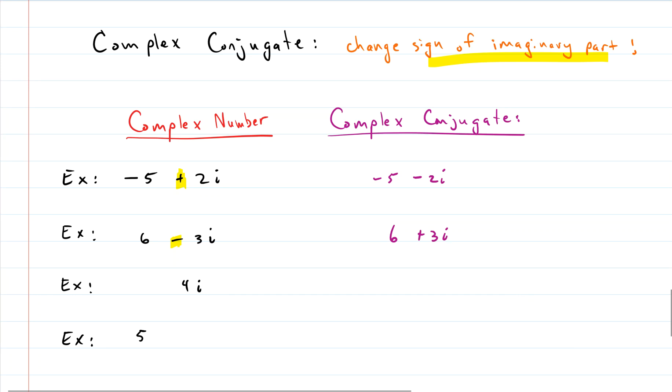So this next one we have just the imaginary part 4i, so we change its sign, right? Negative 4i would be the complex conjugate to the complex number 4i. And our last example is 5, which is a real number, and this complex conjugate is just 5. So why didn't I change anything that time?